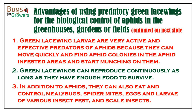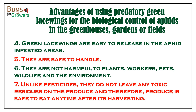The advantages of using predatory green lacewings for the biological control of aphids in greenhouses, gardens, or fields are as follows. Green lacewing larvae are very active and effective predators of aphids because they can move quickly and find aphid colonies in aphid-infested areas and start feeding on them. Green lacewings can reproduce continuously as long as they have enough food to survive. They are easy to release in aphid-infested areas, safe to handle, and not harmful to plants, workers, pets, wildlife, or the environment. Unlike pesticides, they do not leave any toxic residues on produce, and therefore the produce is safe to eat any time after harvesting.